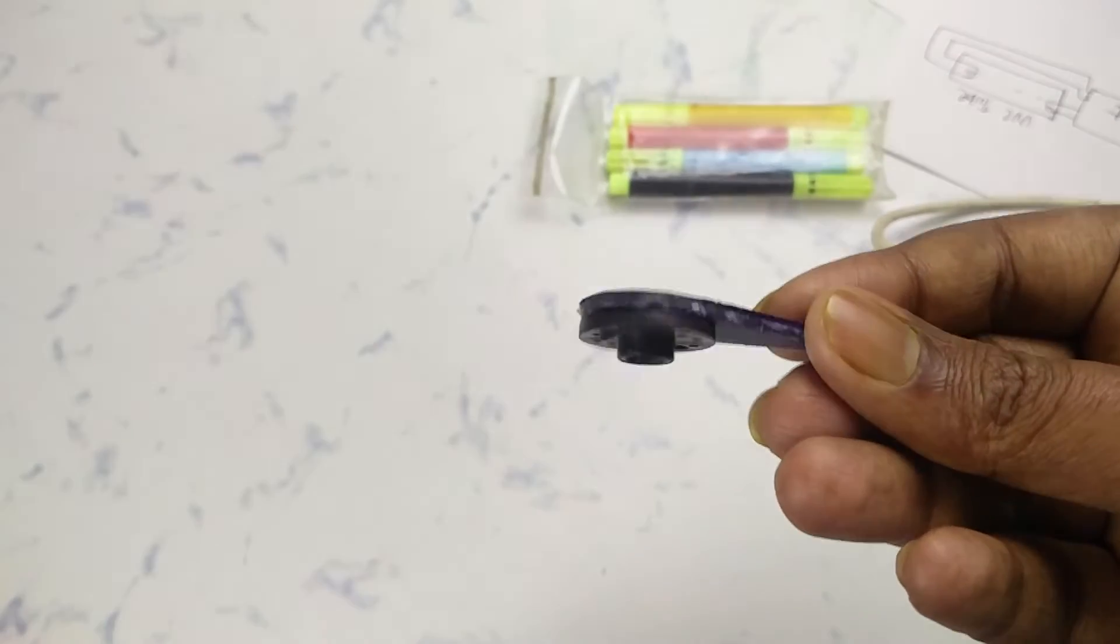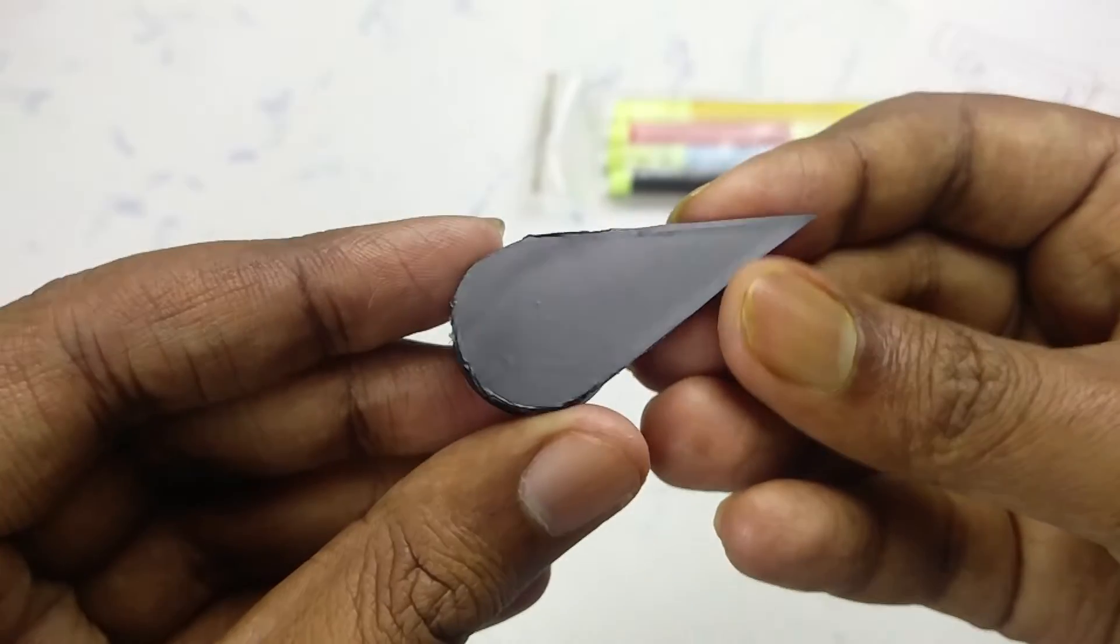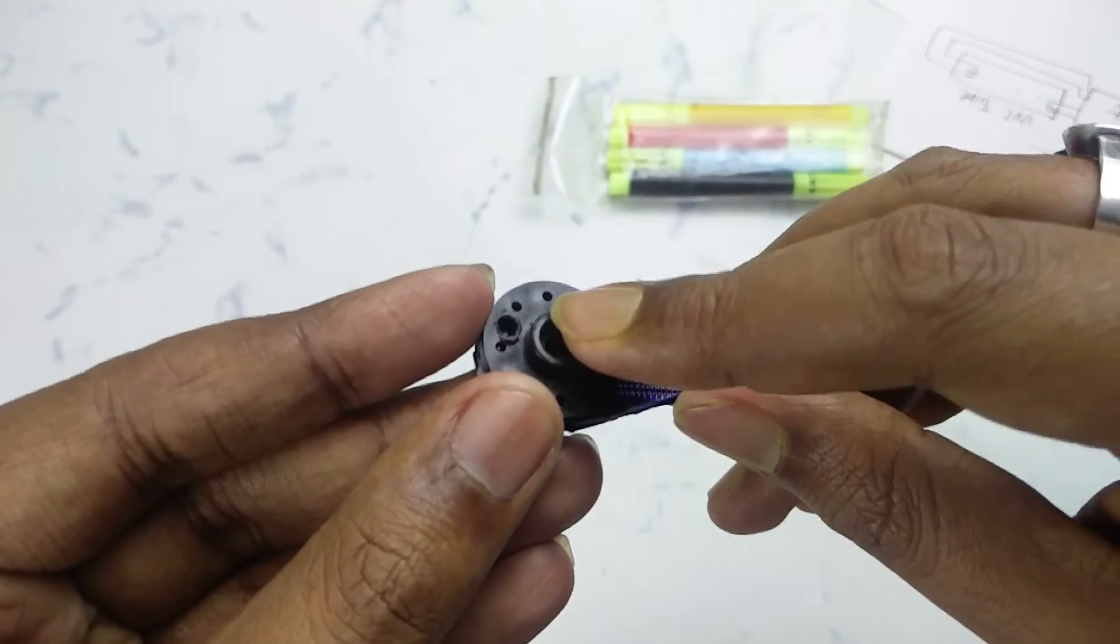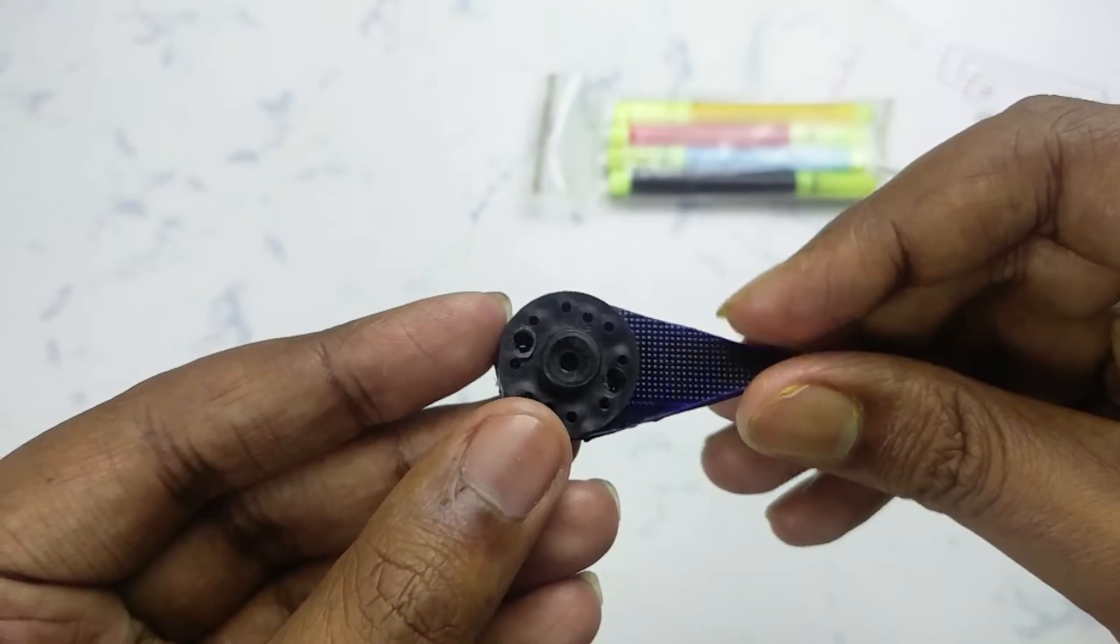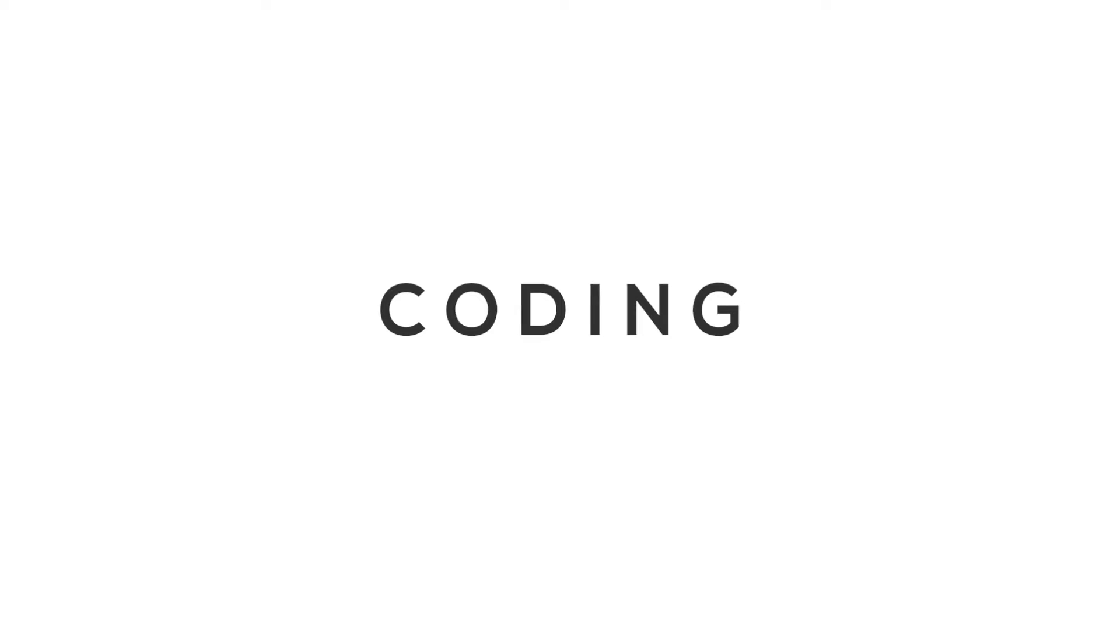I attached a pointer made out of acrylic with the servo horn. I used a piece of vinyl to make the pointer look good. Now it is the time for coding.